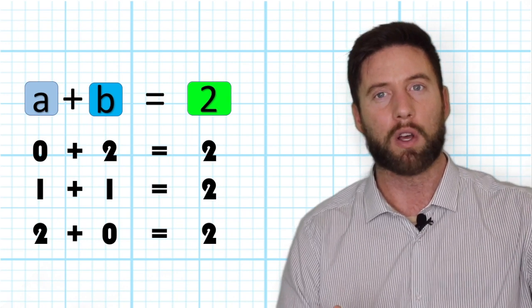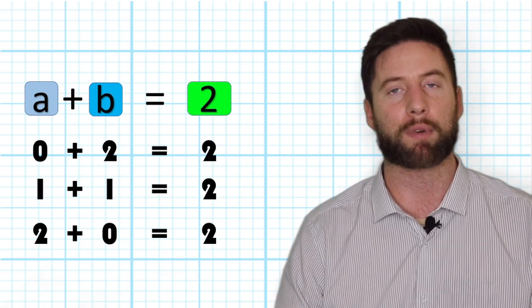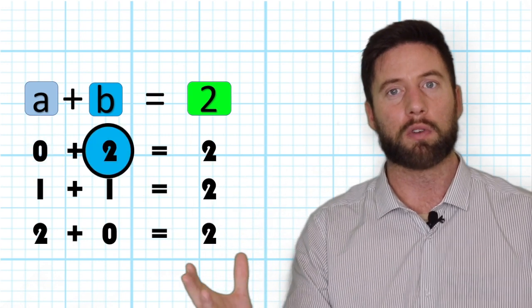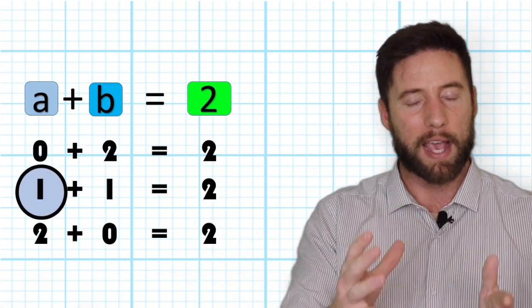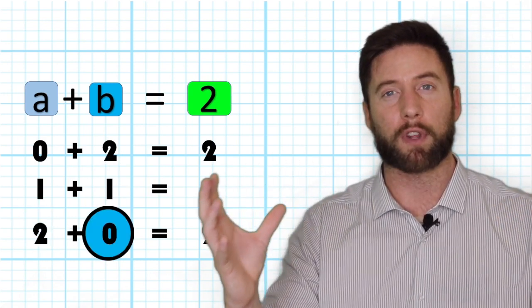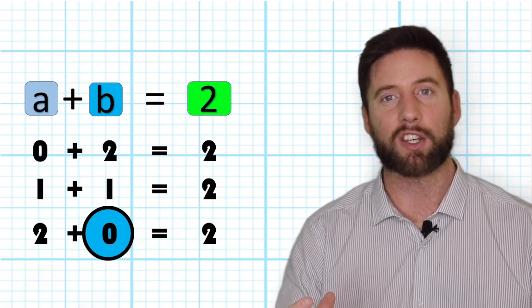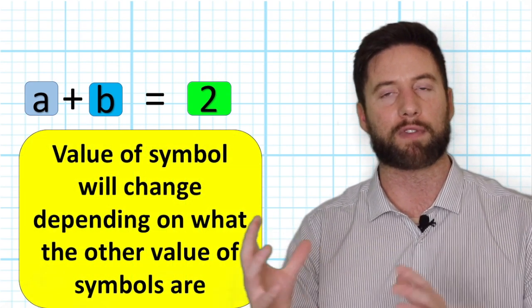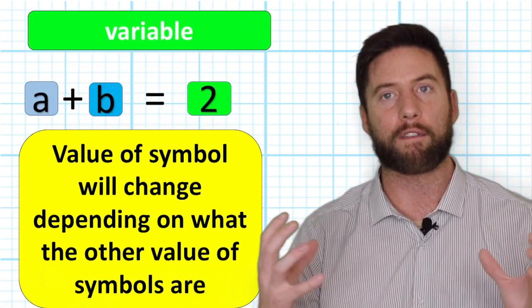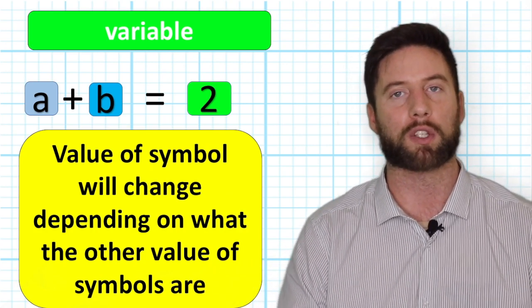And that brings something else that's really important. Did you notice that each symbol could have a different value depending on what the other symbol represents? For example, if A is 0, then B has to be 2. If A is 1, then B has to be 1. And if A is 2, then B has to be 0 for the equation to be balanced. So a symbol's value can change depending on what the other symbols are doing. This means it is variable. These symbols are variables.